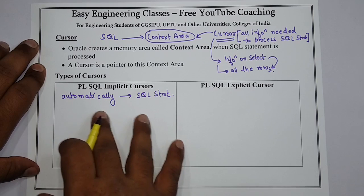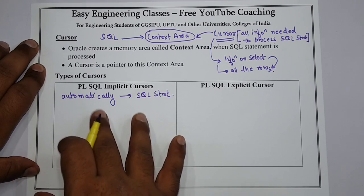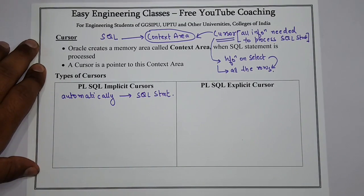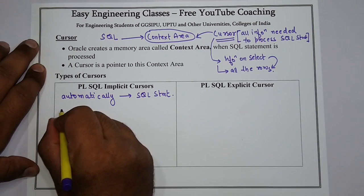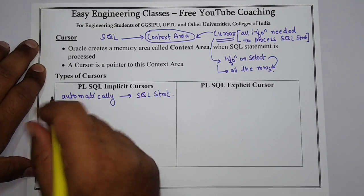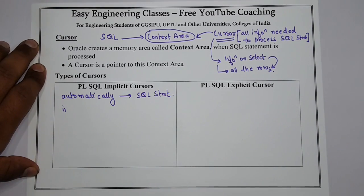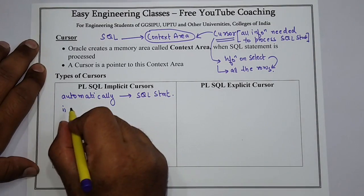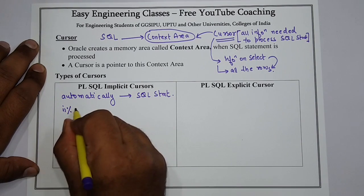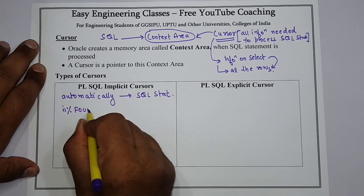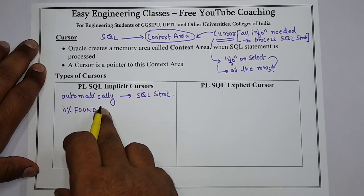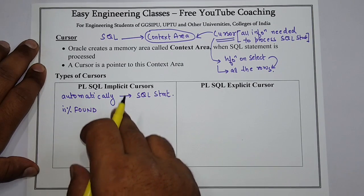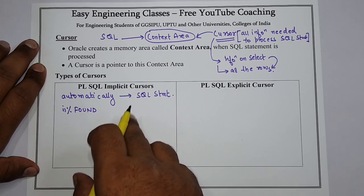There are certain attributes which are used by PL/SQL cursors, and these attributes are very important. They are used with the SQL command. The first attribute is %FOUND — it returns true if a DML statement like INSERT, DELETE, or UPDATE affects at least one or more rows.